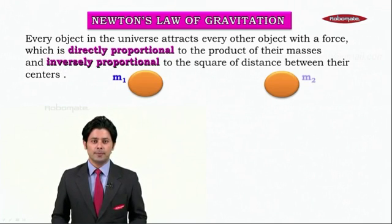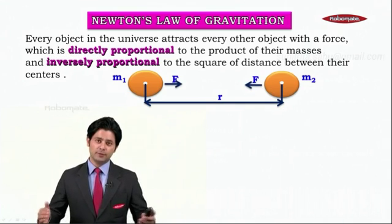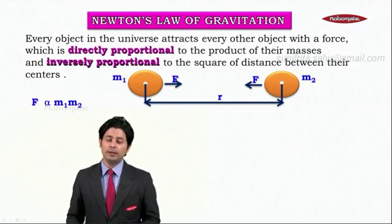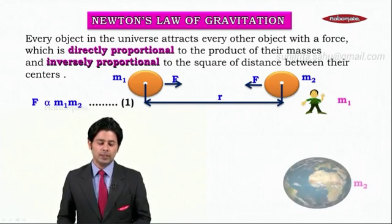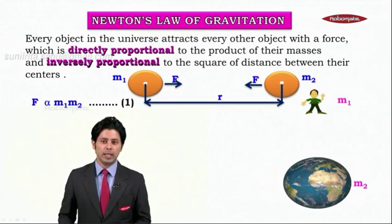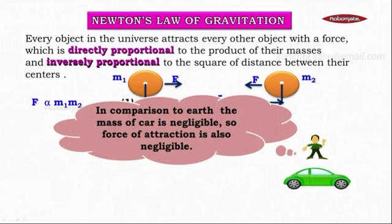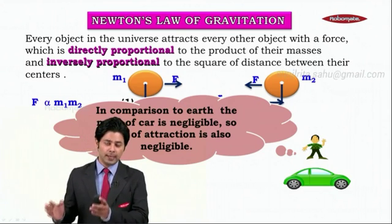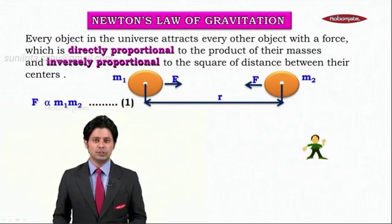Consider two objects having mass m1 and m2, separated by a distance r from the line joining their centers of mass. The force of attraction between them is F ∝ m1 × m2 — this is equation one. For example, if m1 is a man and m2 is the earth, the man is pulled towards the center of earth. The force between a man and a car exists, but it is negligible compared to the force between the man and the earth, which is why we don't get attracted towards nearby objects.